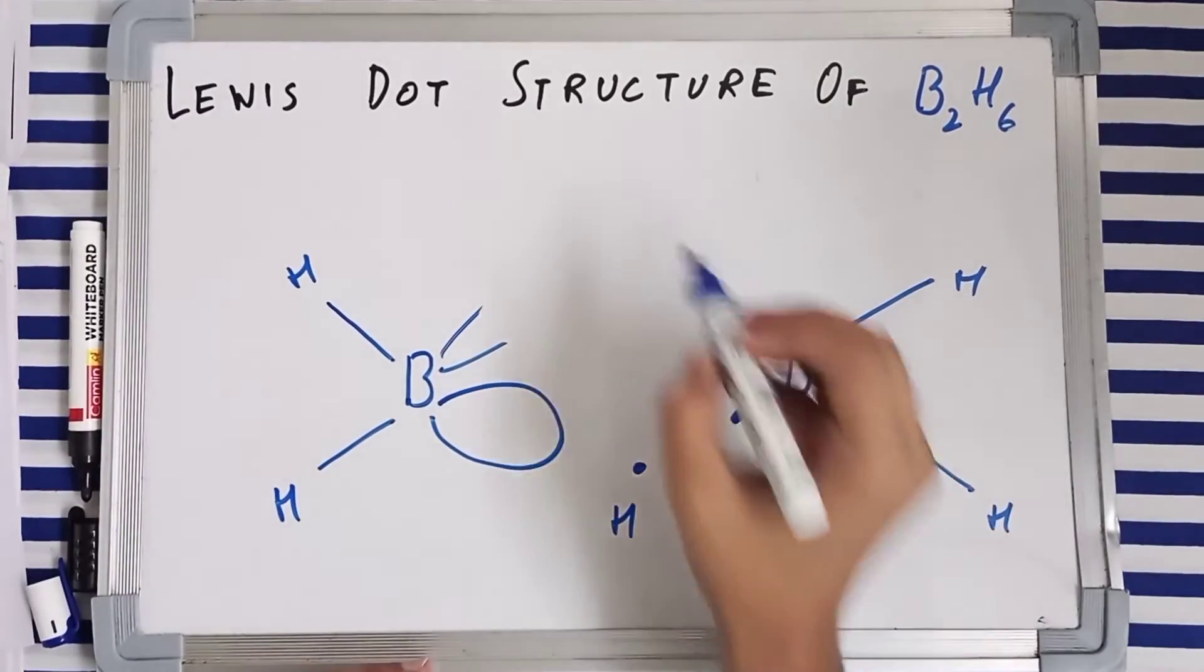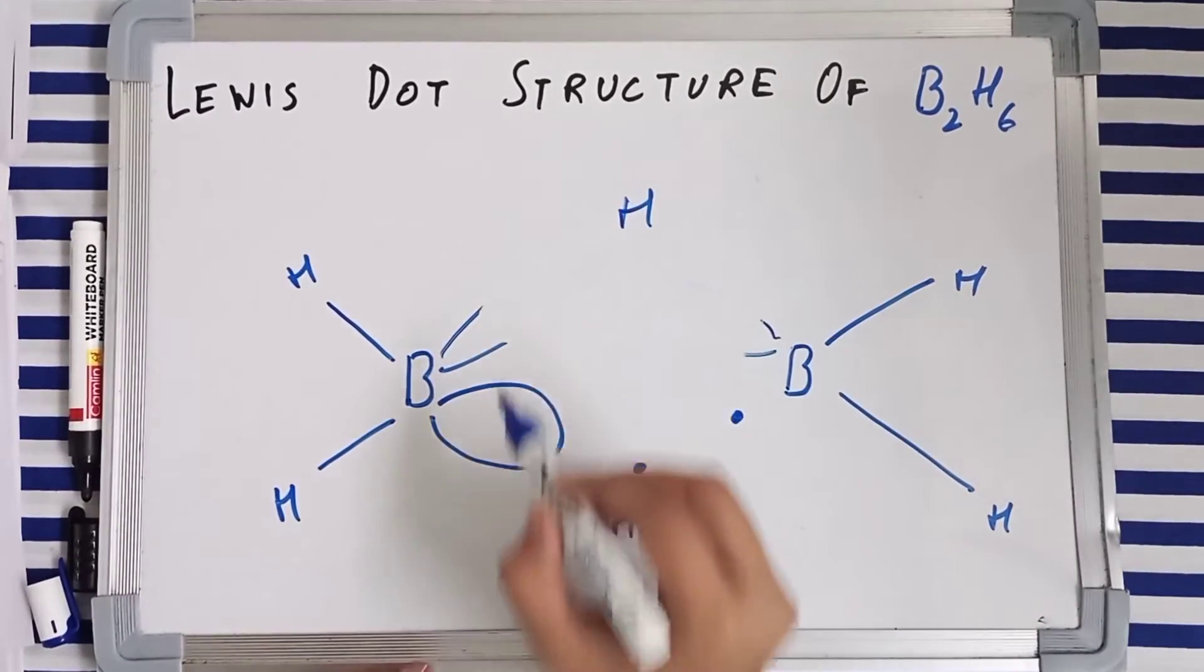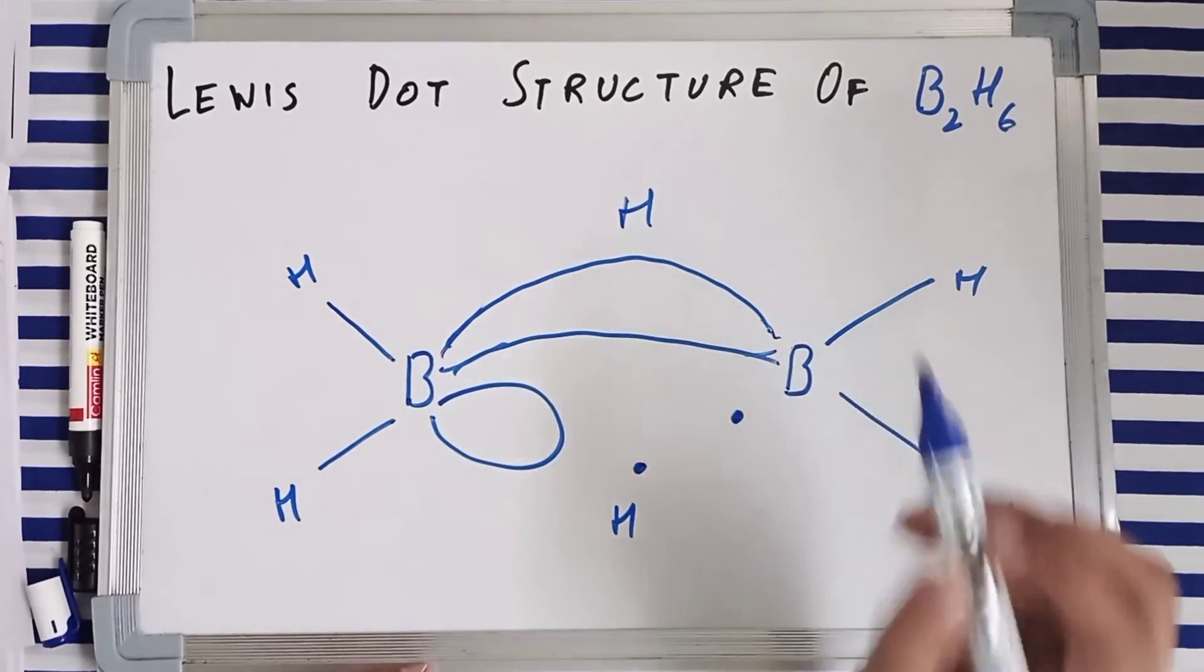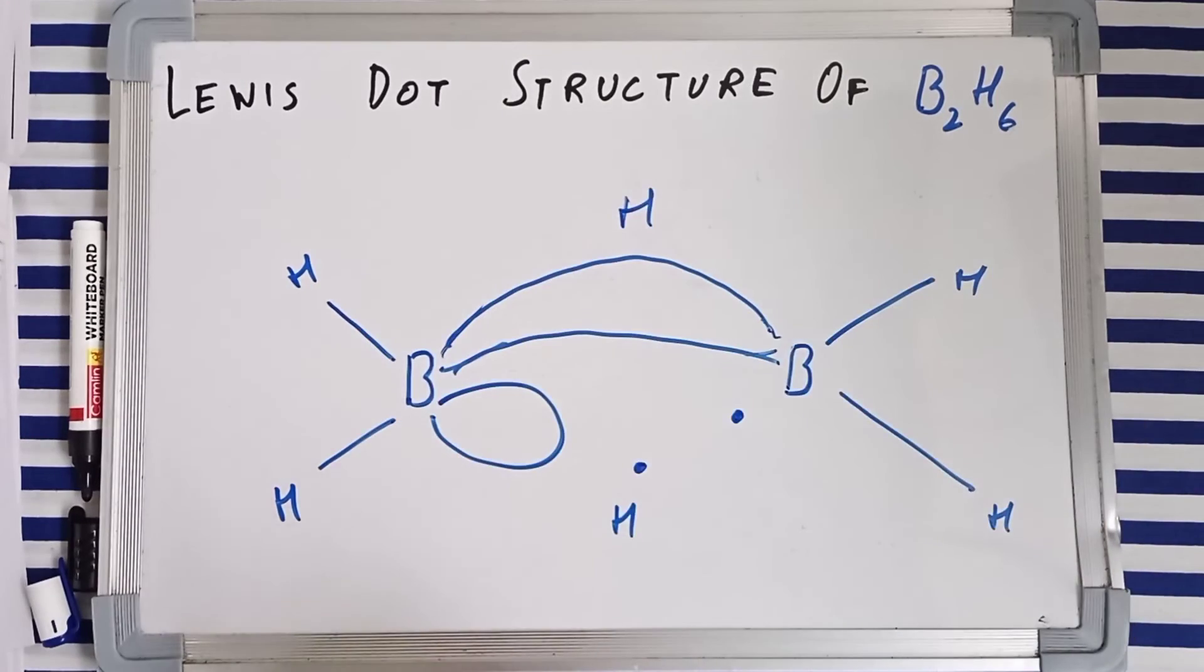The first boron, the second boron, and this hydrogen. And we draw it something like this to represent the banana bond.